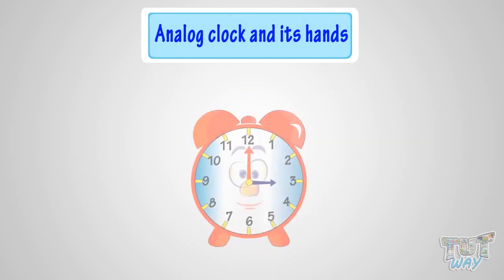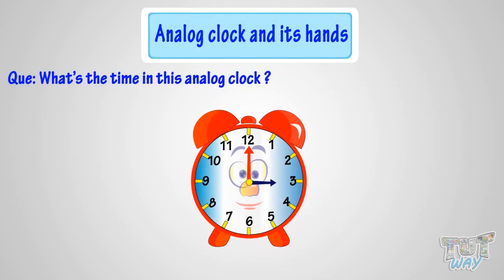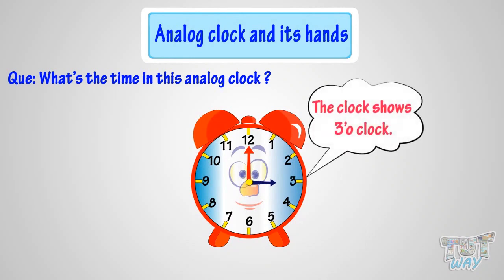Can you tell me what's the time in this analog clock? Let me help you do that. The clock shows 3 o'clock. When the minute hand is at 12, it is time to the hour.